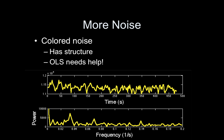On the other hand, with BOLD data — with signal — there are two types of structure. We have the signal structure, and there's also low-frequency noise. This peak here shows a high presence of low-frequency drift. This peak corresponds to the frequency of the task, so that's showing us good things too. And then there's this issue called aliasing, which I'm not going to talk about. But basically the power spectrum tells us good things about our signal, and bad things about our noise structure.